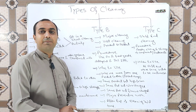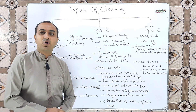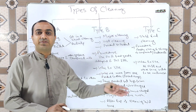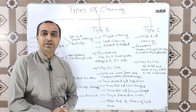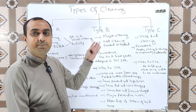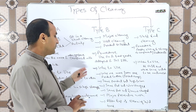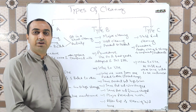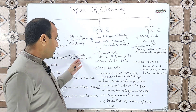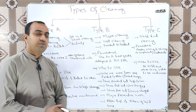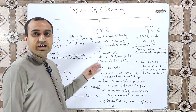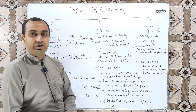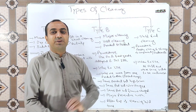We also perform Type B cleaning when manufacturing a batch of the same product but the flavor is changed — for example, after manufacturing a batch with strawberry flavor, if we want to manufacture with cherry flavor, we perform Type B cleaning. Additionally, Type B cleaning is performed after major preventive work where equipment parts are exposed, and after the expiration of the cleaning hold time of any equipment or area.